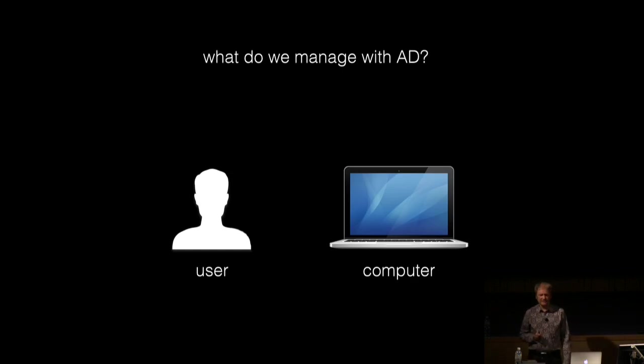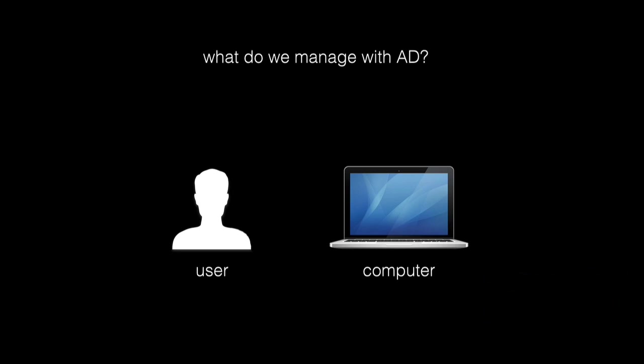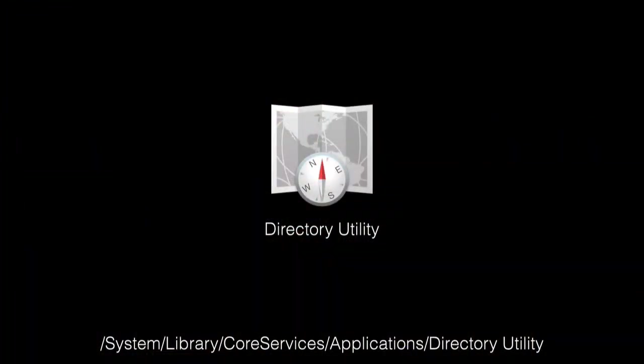There are two very different ways you can integrate into a directory service. You can establish a trust relationship between the device and the directory service — known as binding — or you can simply leverage the information within the directory service to define what the experience for the user of this machine is going to be. So do you manage the user or do you manage the device? Apple has offered the AD plugin since 10.3 in Panther, and the traditional method was to bind to an Open Directory server and use Workgroup Manager, otherwise known as the golden triangle.